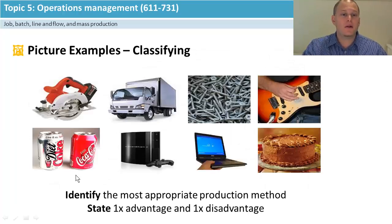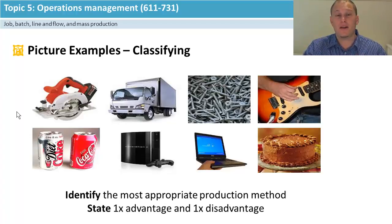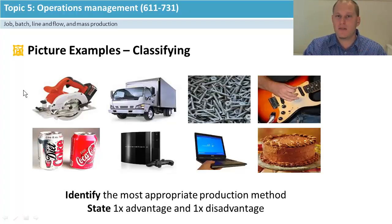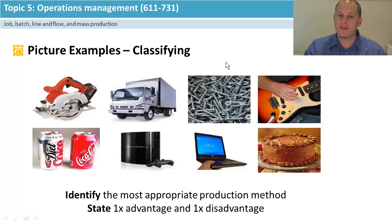Identify the most appropriate production method for each of these eight product styles and give one advantage and one disadvantage. For the table saw, maybe job or batch — you probably don't go mass because it's quite complex, though you could argue mass with huge setup costs. For trucks, maybe flow or even job production if it's a really specialized one — not wrong if you pick mass, but again, really big setup and running costs. For screws, I'd go with mass — pump them out.